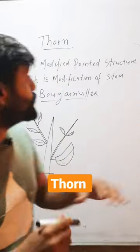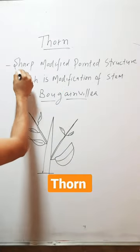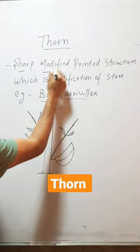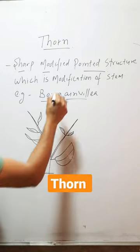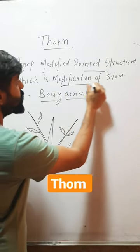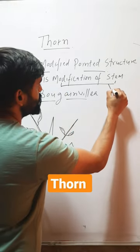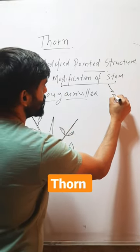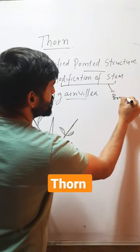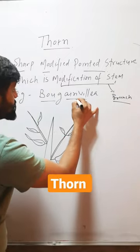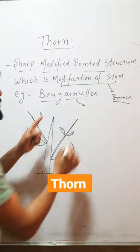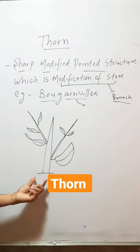Thorn is a sharp, modified pointed structure, which is a modification of stem or branch. This structure is found in Bougainvillea.